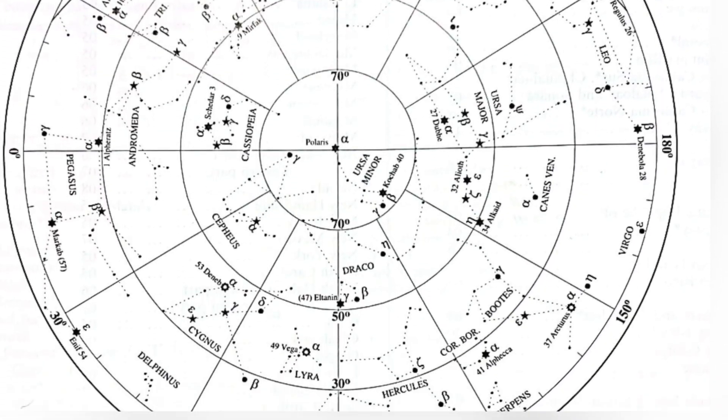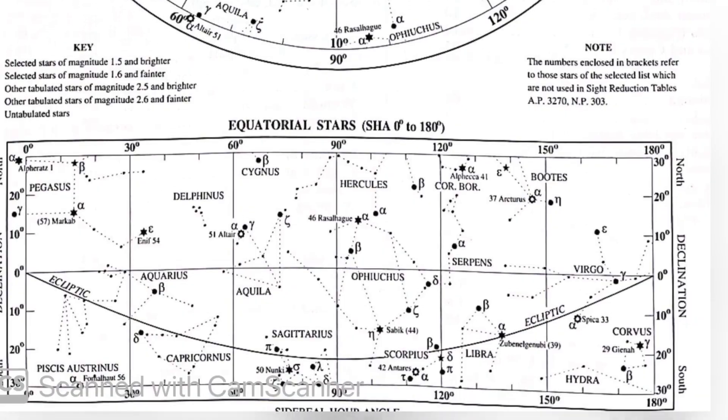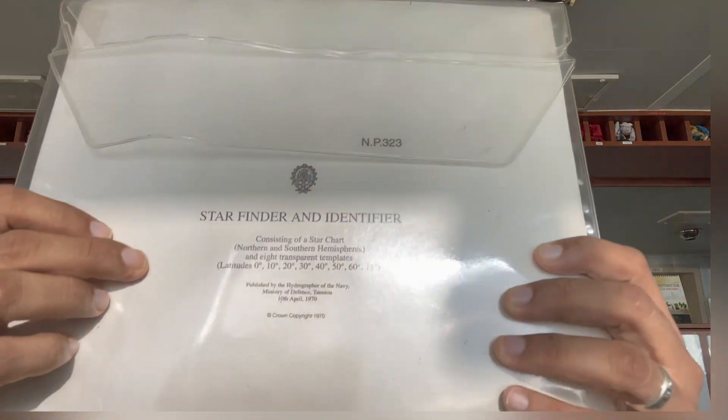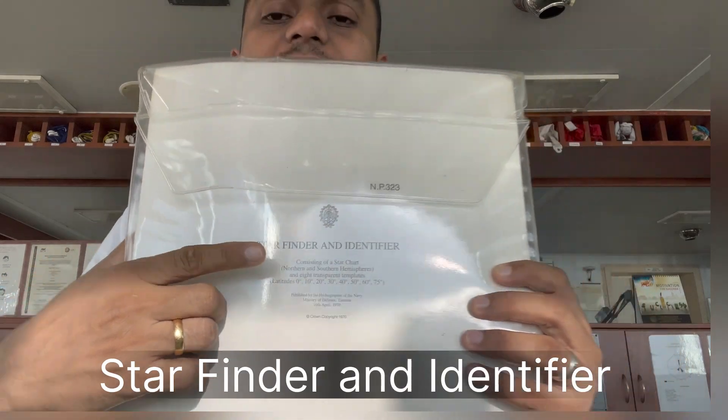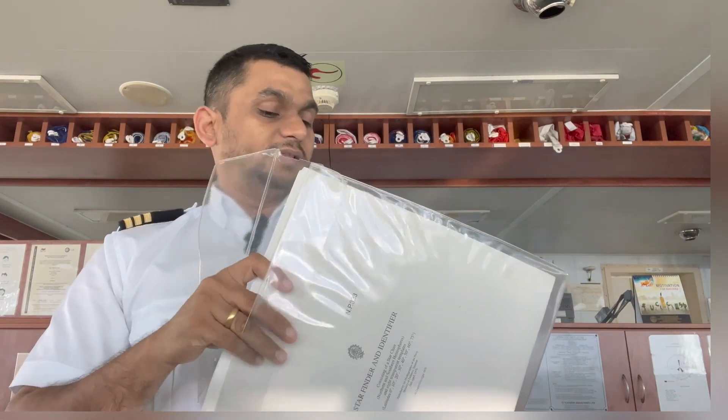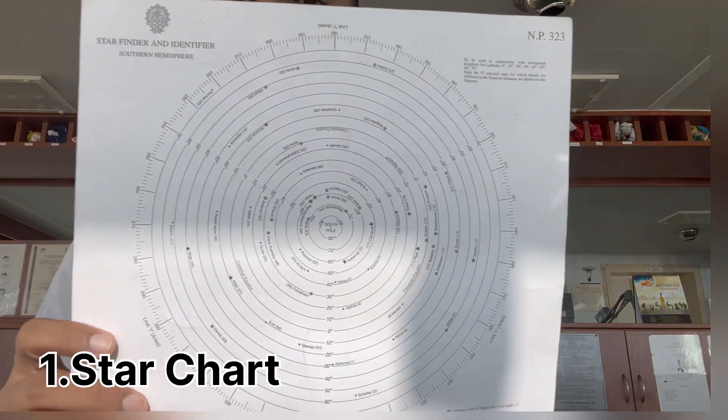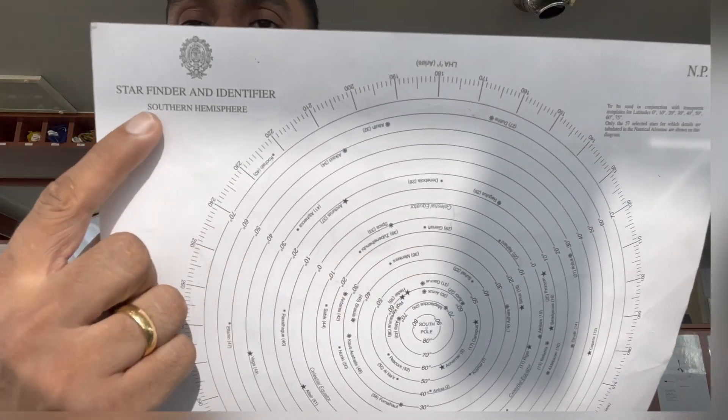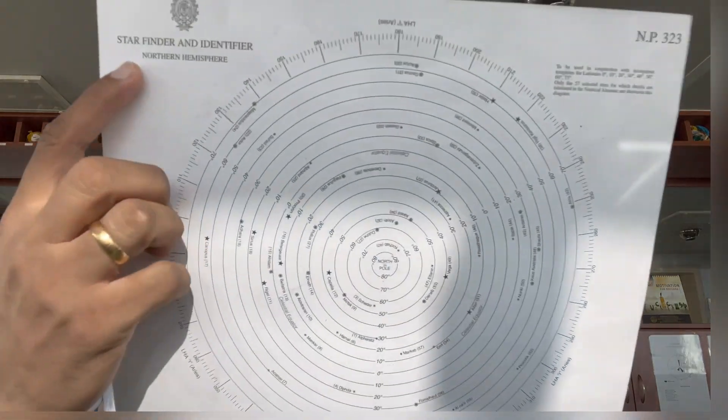You cannot remember all the names of the stars when you first come to sea, because when you join as a cadet you have very little idea about stars, constellations, and their names. For that, on board you are provided with a template called the star finder and identifier. This book — this template — is the traditional way to find the star. It has charts for two hemispheres: one for the southern hemisphere and one for the northern hemisphere.